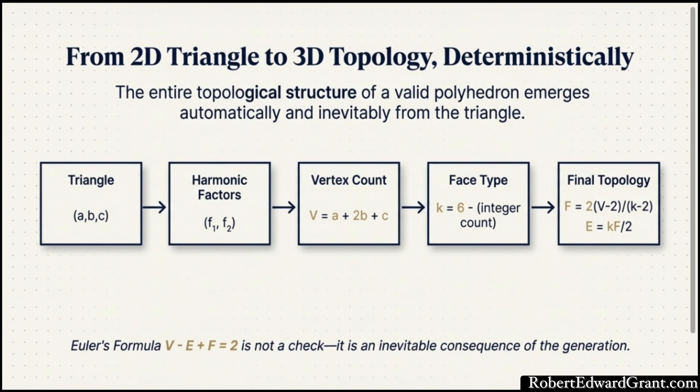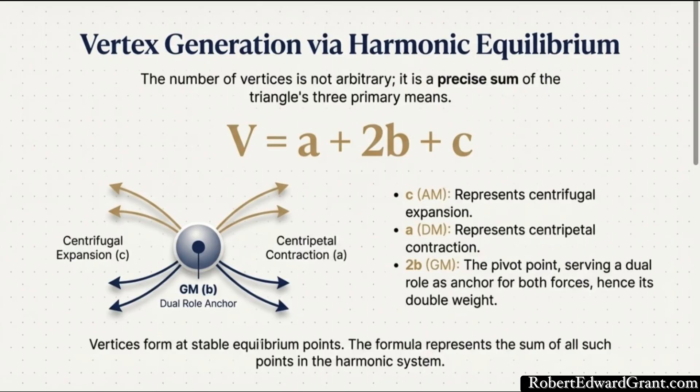This is where the source material gets really compelling. The reason sounds more like physics than pure geometry. It views the final solid as an equilibrium system, a harmonic cascade centered on B. You have outward centrifugal expansion anchored by C, the maximum reach, and inward centripetal contraction pulling inward, anchored by A, the minimum radius. B is the balancing point, the spine of the structure. It has to serve a dual role. It acts as the limit for the outward push defining the shape's boundary, but also as the anchor for the inward pull. To maintain that perfect stable equilibrium, it has to do both jobs, and that's why it's counted twice.